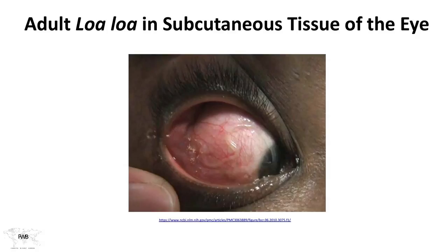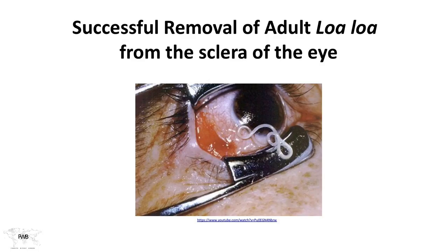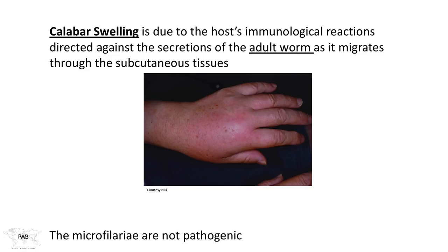This is what gives loa loa its name: the African eye worm. You can see what a person might be alarmed to notice looking in the mirror — a worm migrating across the eyeball, visible in the subcutaneous tissue of the eye. Successful removal involves making a small incision to extract the adult loa loa. Calabar swellings are due to the host's immunological reaction to secretions from the adult worm as it migrates through the tissue. These swellings are often seen in people who did not grow up in the area and did not develop immune tolerance.